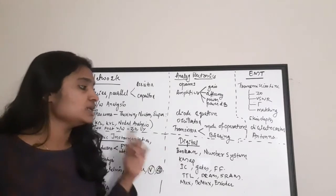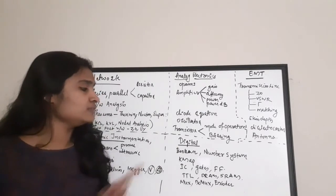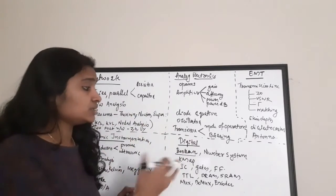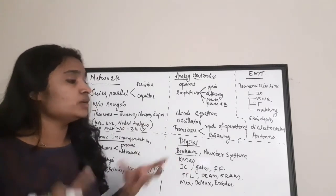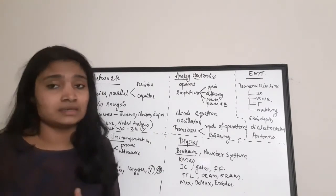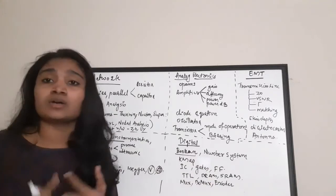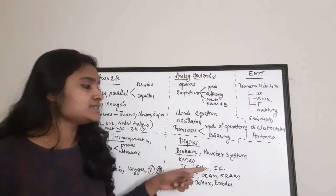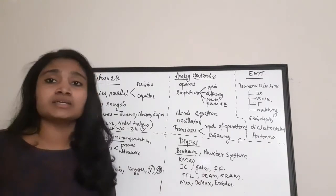Digital Electronics is very, very important. You must study Boolean simplifications — I'm sure at least one question will come from this, either with a circuit or by directly simplifying an expression. Number systems are very important: binary, decimal, octal, and hexadecimal conversions. Also study K-map simplification, IC gates, flip-flops, TTL, memories (DRAM and SRAM), multiplexers, demultiplexers, encoders, and decoders.